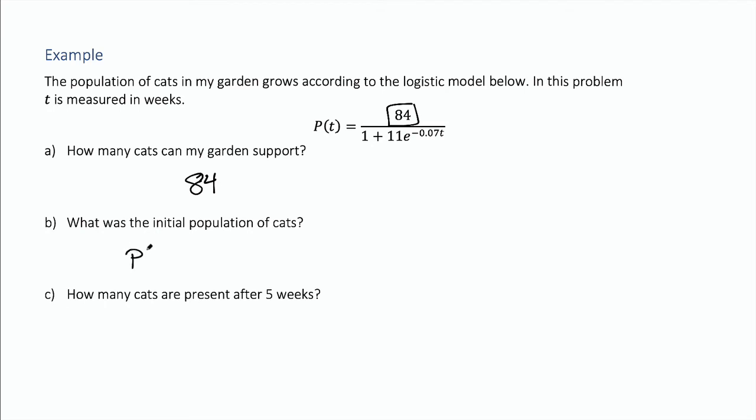So I'm going to go and do that. P(0) equals 84 over 1 plus 11 times e to the, well this thing times 0 which is just 0. Now anything to the 0 is 1 so this is 1 plus 11 times 1, okay that's 84 over 12 which is 7. So the initial population was 7.